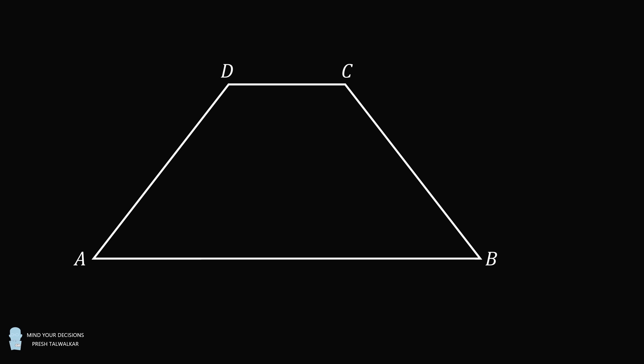ABCD is a trapezoid. AB is parallel to CD, and AB is greater than CD. Let P be a point in the interior of the trapezoid and connect it to the four vertices, dividing the trapezoid into four triangles.